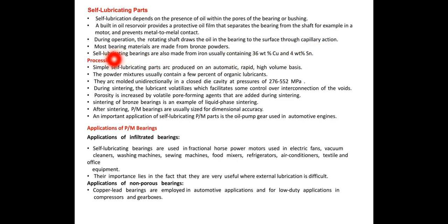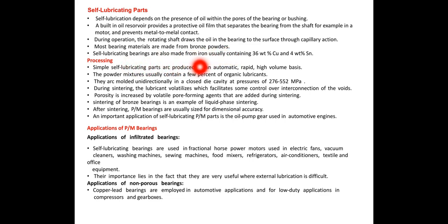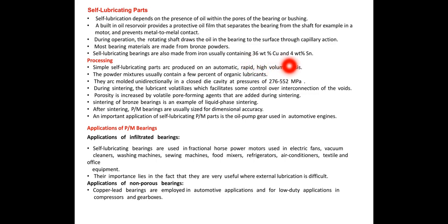Most bearing materials are made from bronze powders. Self-lubricating bearings are also made from iron, usually containing 36 weight percent copper and 4 weight percent tin.